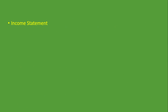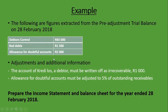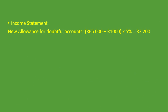Let's see what goes into the Income Statement. The adjustment goes into the Income Statement. We are given an Allowance for Doubtful Accounts of R2,000 from the previous period. The new Allowance is 5% of Outstanding Receivables — meaning Receivables after deducting the Bad Debts given. We take Debtors Control of R65,000 minus R1,000, then multiply by 5%, giving us a new Allowance for Doubtful Accounts of R3,200.